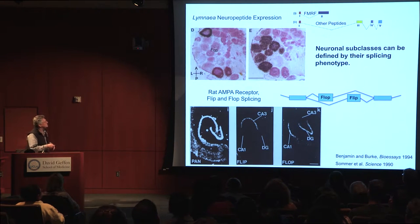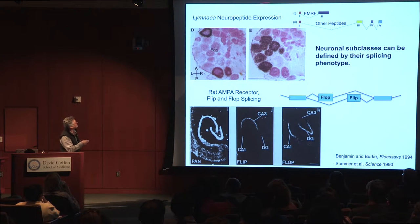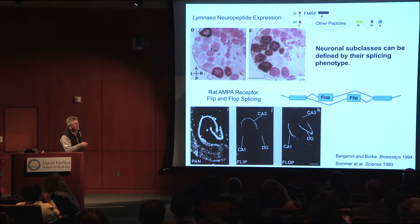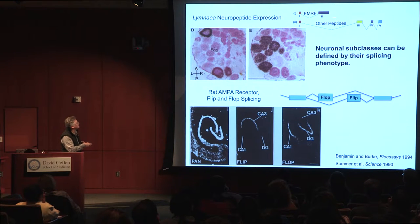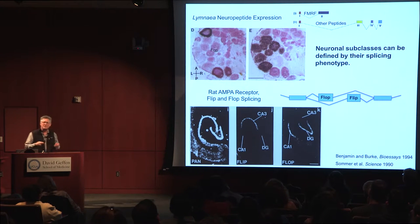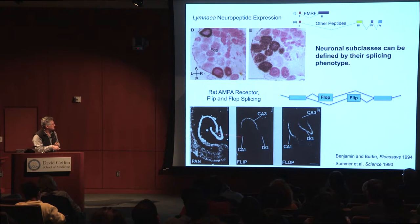For example, in the snail Limnea, the gene for the fromerfamid peptide, which controls heartbeat among other things, is encoded on a particular splice transcript. That same gene produces mRNAs for other peptides by changing the splicing pattern. When you section through a ganglion and probe for either the fromerfamid exon or other exons, you see that certain neurons make one splice variant and other neurons make the other — regulation that is very precisely controlled by cell type.